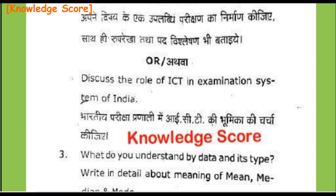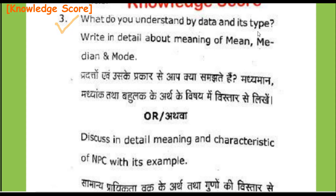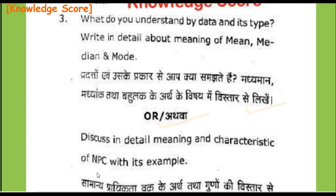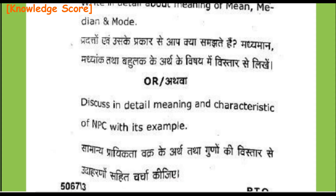Question number 3, Section A: What do you understand by data and its types? Write in detail about the meaning of mean, median and mode — Pradatto evam uske prakar se aap kya samajte hai; madhyaman, madhyank tatha bahulak ke arth ke vishay mein vistaar se likhiye. OR: Discuss in detail the meaning and characteristics of NPC (Normal Probability Curve) with examples — Samanya praiktata vakra ke arth tatha gunon ki vistaar se udaharanon sahit charcha kijiye. This completes Section A of this paper.